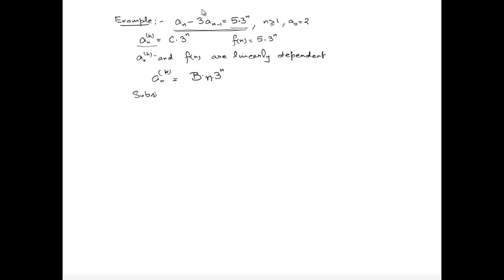Substituting the particular solution aₙᵖ = B·n·3ⁿ into the recurrence relation gives B·n·3ⁿ - 3·B·(n-1)·3ⁿ⁻¹ = 5·3ⁿ. Dividing through by 3ⁿ gives Bn - B(n-1) = 5, so B = 5. Therefore the general solution is the sum of the homogeneous part and the particular solution: aₙ = c·3ⁿ + 5n·3ⁿ.